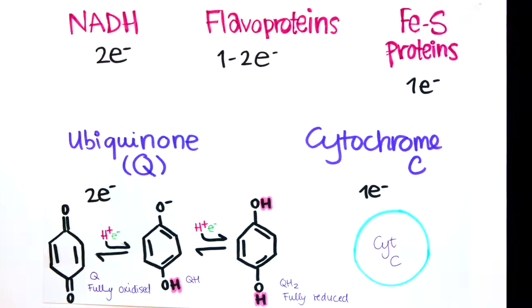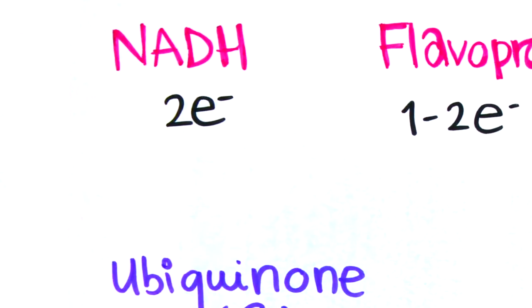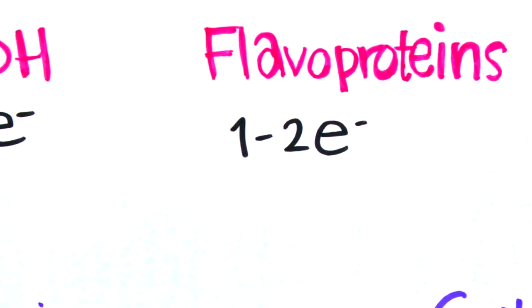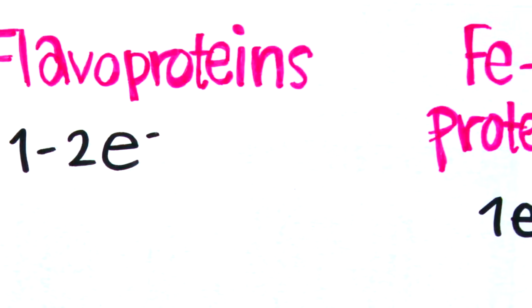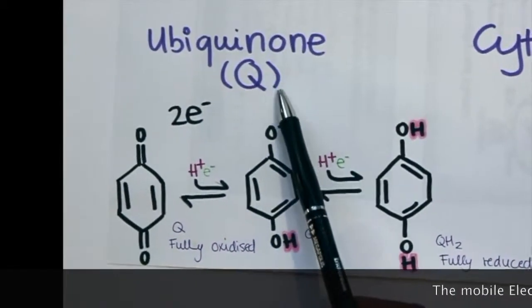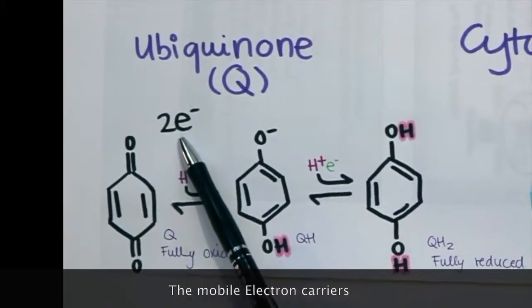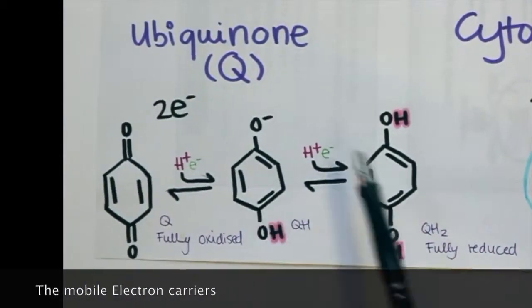There are 5 electron carriers used in this electron transport chain. NADH can carry 2 electrons at a time. Flavoproteins can carry 1-2 electrons at a time, whereas iron-sulfur proteins can only carry 1 at a time. Finally, we have the mobile electron carriers, ubiquinone, which can carry 2 electrons at a time. It has 3 forms.